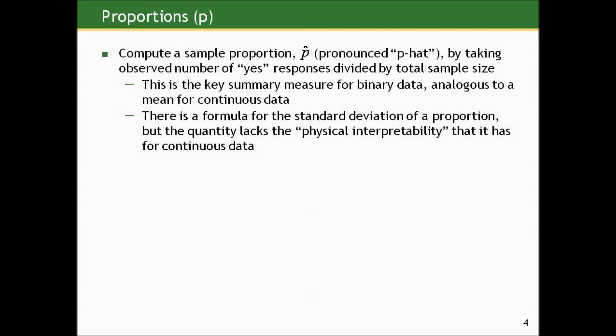This is the key summary measure for binary data, analogous to a mean for continuous data. There's a formula for the standard deviation of a proportion, but it lacks the physical interpretability that it has for continuous data, so we won't bother with that for now.